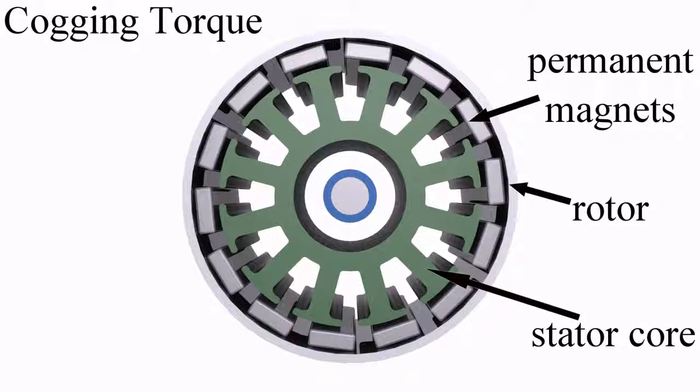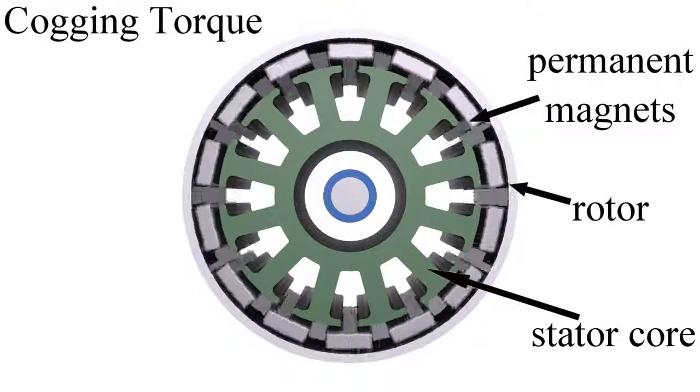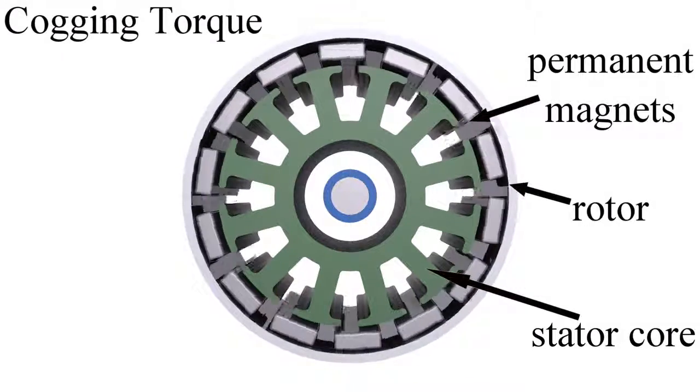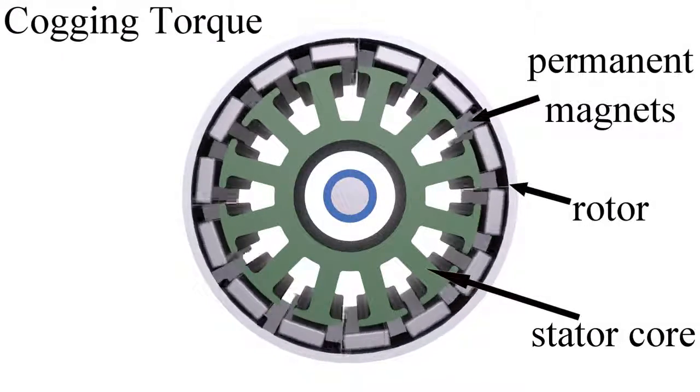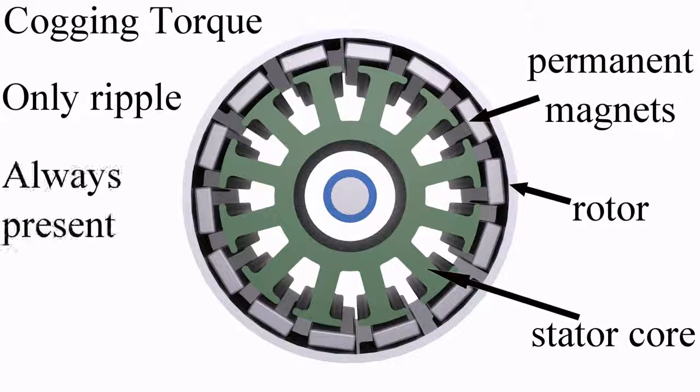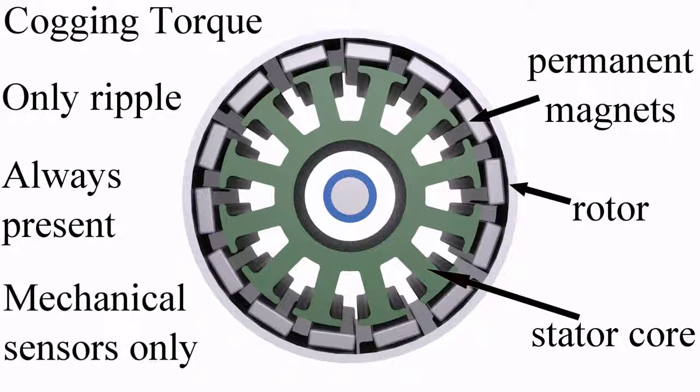Cogging torque, also called detent torque, is when the permanent magnets attract the motor's core. Unlike mutual and reluctance torques, cogging torque cannot make the motor spin continuously, only contributes to torque ripple, is always present, and is only detectable by mechanical sensors.